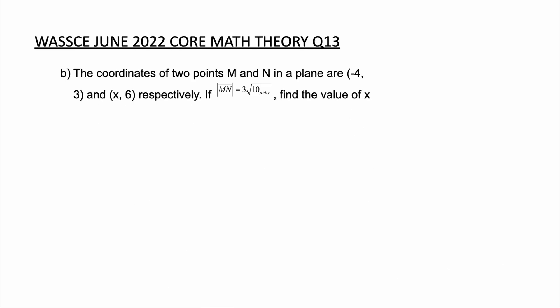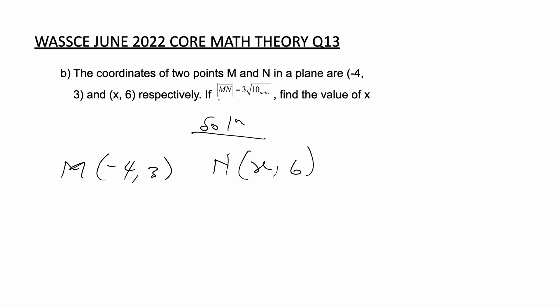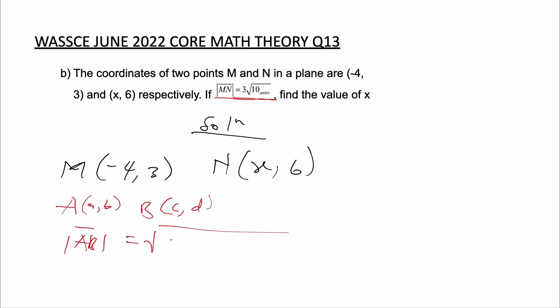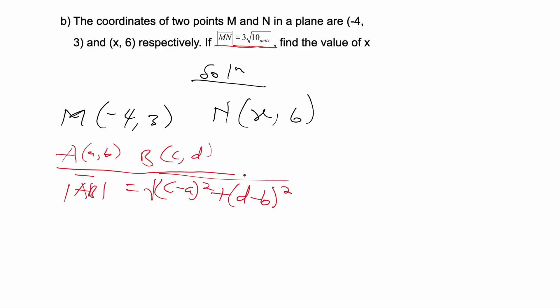Question 13b: the coordinates of two points M and N in a plane are negative 4, 3 and x, 6 respectively. If the length MN is equal to 3 root 10 units, find the value of x. So M is (-4, 3) and N is (x, 6), and MN equals 3 root 10. When we have two points A and B with coordinates (a, b) and (c, d) respectively, then the length of AB would be equal to the square root of (c minus a) all squared plus (d minus b) all squared.